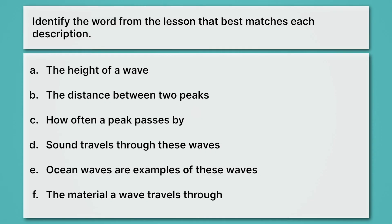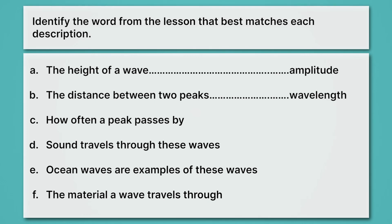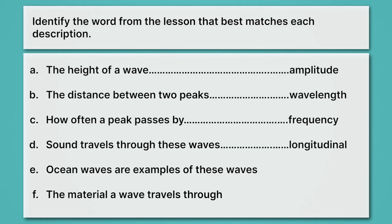Let's put all of these ideas into practice. In each case, identify the word from the lesson that best matches each description. First up, the height of a wave — that's amplitude. What about the distance between two peaks? That turns out to be wavelength. How often a peak passes by? How frequently does it pass by? That's frequency. D says sound travels through these waves — that's longitudinal waves, when we have our forwards and backwards oscillations. E is ocean waves are examples of these waves — that would be transverse. And lastly, the material a wave travels through — that's describing the medium.